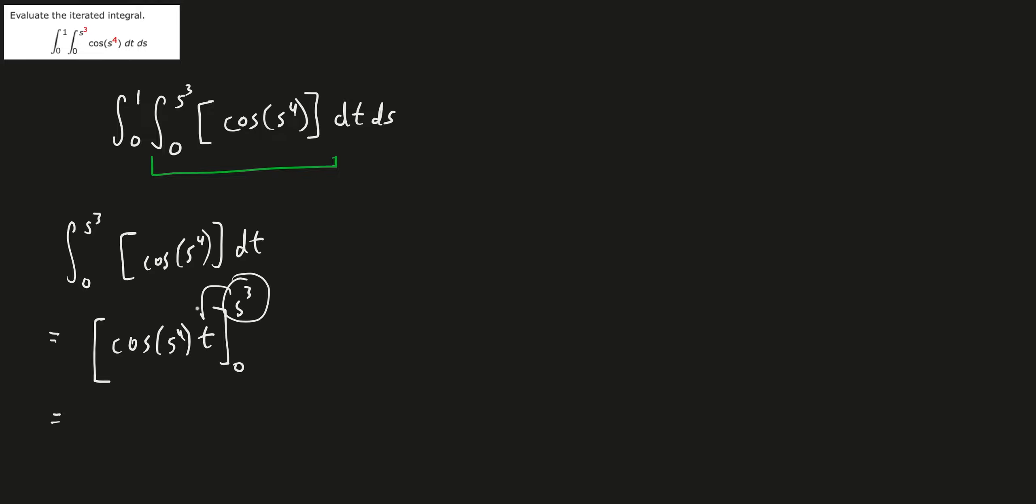So plugging this in for t, we end up getting cosine s to the fourth times s cubed minus cosine s to the fourth times 0. This is gone. So it's just cosine s to the fourth times s cubed.